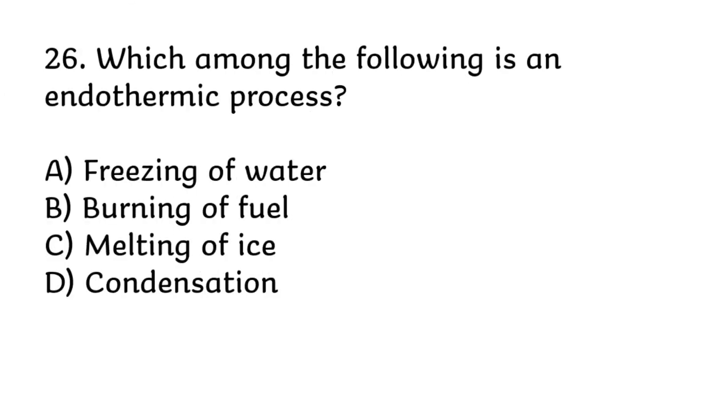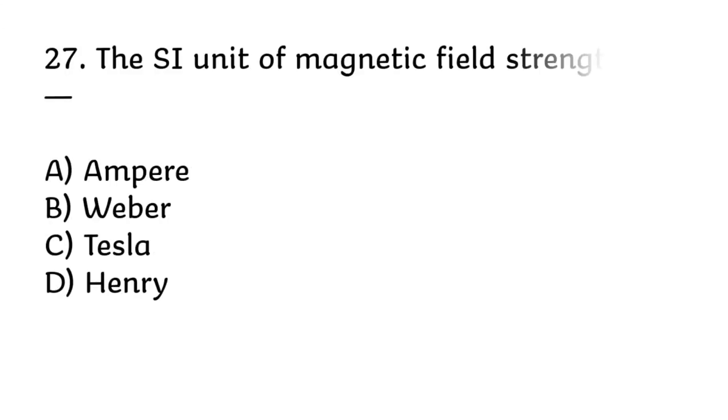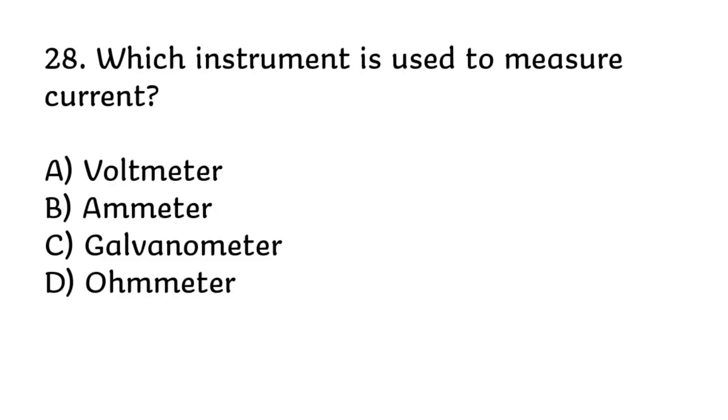Which among the following is an endothermic process? Correct answer is C, melting of ice. The SI unit of magnetic field strength is? Correct answer is C, tesla. Which instrument is used to measure current? Correct answer is B, ammeter.